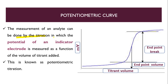Here there is a difference in the end point from normal titration. So here we are going to measure the potential of an indicator electrode. As a reference electrode is a standard electrode, and whatever change in the concentration of analyte will be there, that is measured on our indicator electrode. The measurement of potential of an indicator electrode is a function of the volume of titrant added. This is basically what potentiometric titration is.